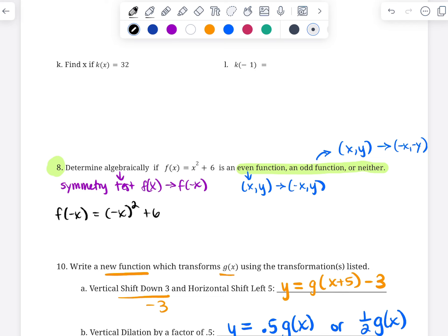So then after you do that substitution, so this is kind of like step 1. Step 2 would be to simplify whatever expression you just created. So this would be, a negative x squared would just be positive x² + 6.